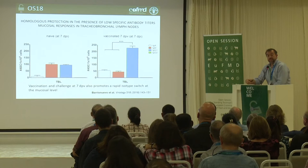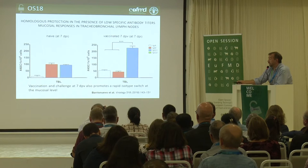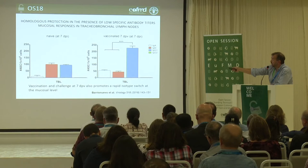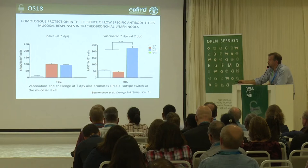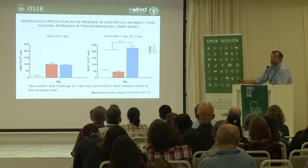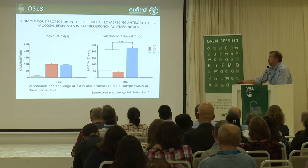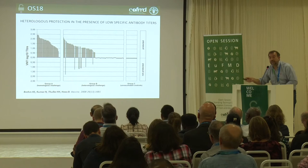More interestingly, at the mucosal level, vaccination followed by challenge at seven days also promoted a rapid isotype switch. You can see a huge difference between the amount of antibody-secreting cells for IgG1 compared with IgM or IgA. We usually don't study what happens after the challenge, so probably we are missing part of the information to understand what is happening in animals with low antibody titers.